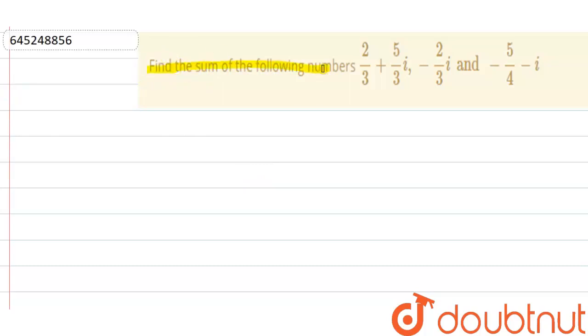Hello everyone, so our question is: find the sum of the following numbers 2/3 plus 5/3 iota, minus 2/3 iota, and minus 5/4 minus iota.